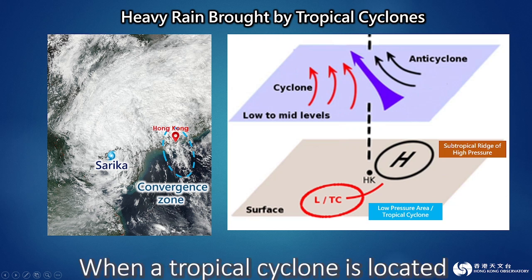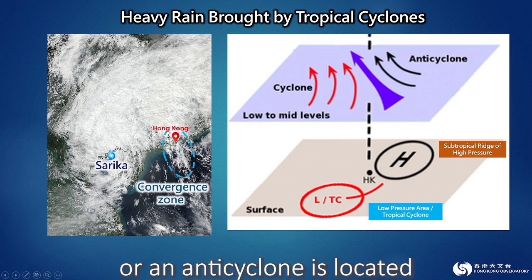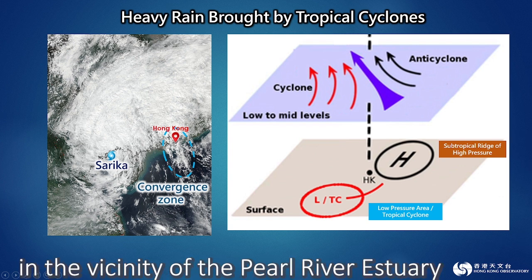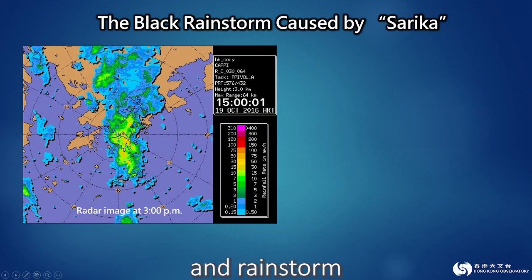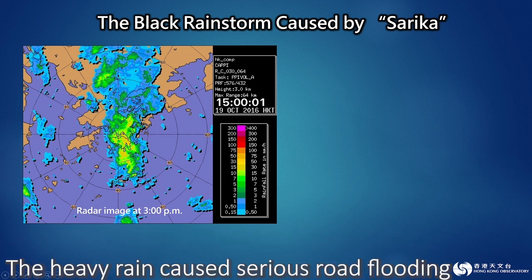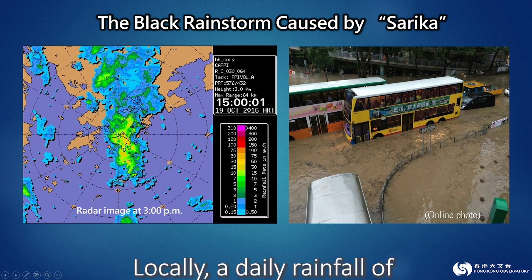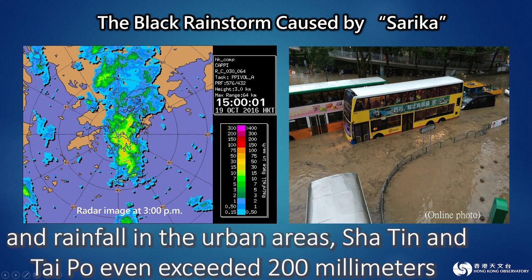When a tropical cyclone is located to the southwest of Hong Kong, and a ridge of high pressure or an anticyclone is located to the northeast, there would likely be a converging southeasterly airstream in the vicinity of the Pearl River estuary, causing severe convection and rainstorm. On that afternoon, an intense rain band covered the urban areas of Hong Kong Island and Kowloon. The heavy rain caused serious road flooding and traffic was severely disrupted. A daily rainfall of more than 100 mm was generally recorded, and rainfall in Shatin and Taipo even exceeded 200 mm.